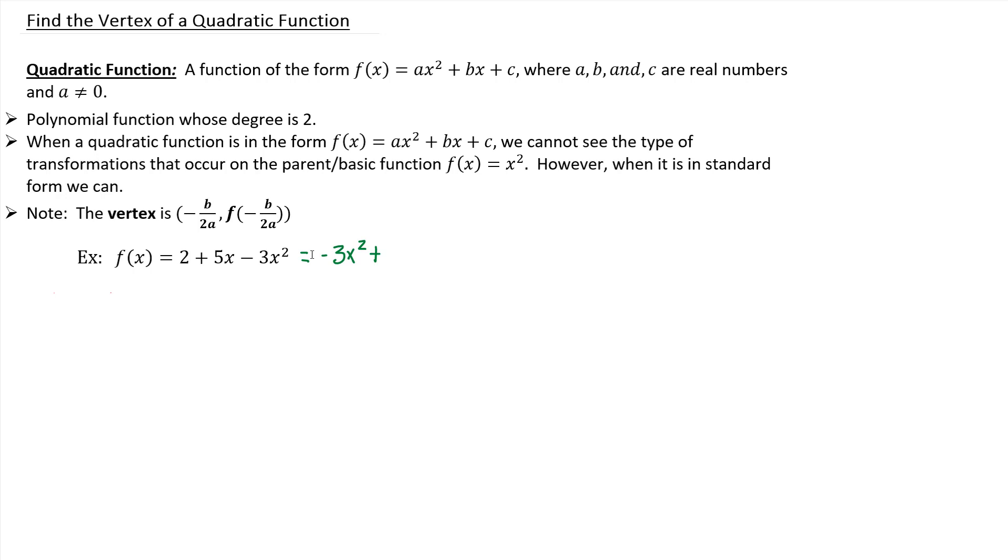So negative 3x squared plus 5x plus 2. Make sure when you're moving those terms that you take the sign in front of them so that you have the right signs at the end of the day. Now you're in that form of ax squared plus bx plus c, so it becomes more obvious who your a is, who your b is, and who your c is.